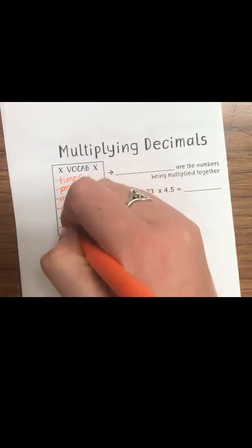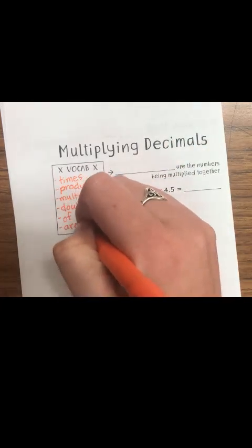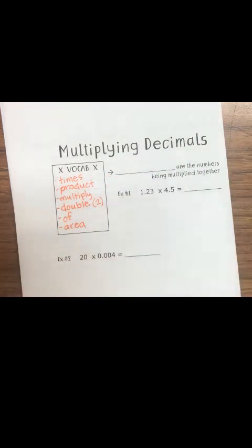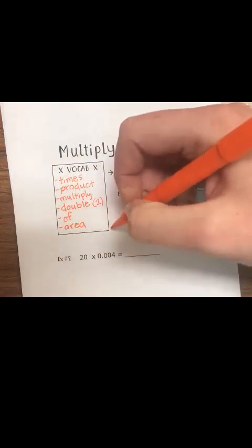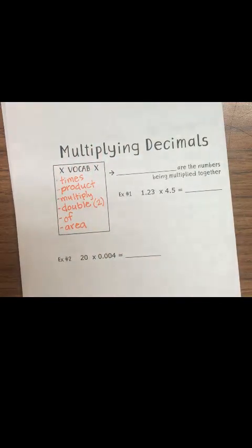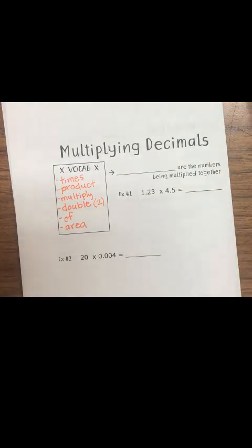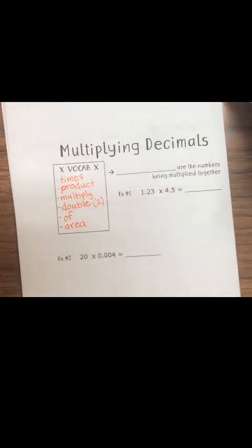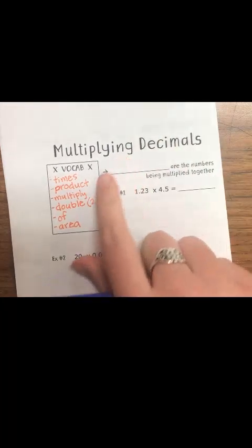The last vocabulary word we're going to focus on is 'area.' If I find the area — even the area of this rectangle — I would multiply this side by this side. So area also means to multiply. Those are just some of the vocabulary words we need to pay attention to in our word problems.